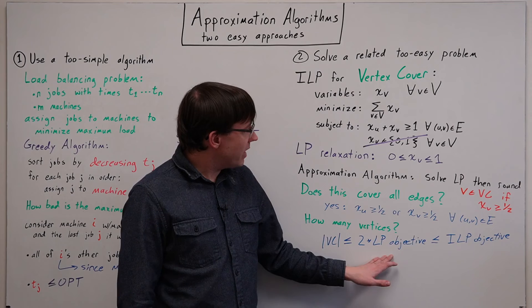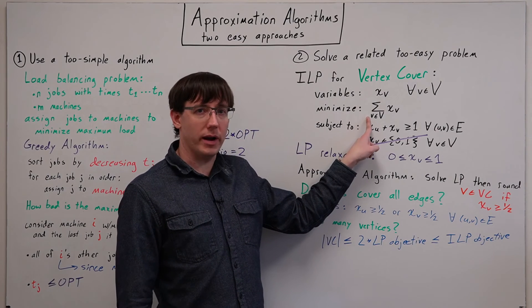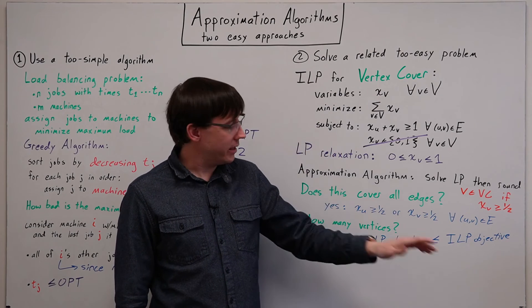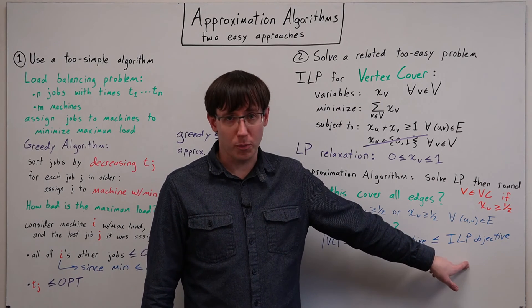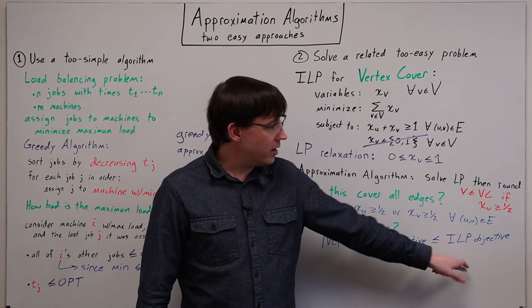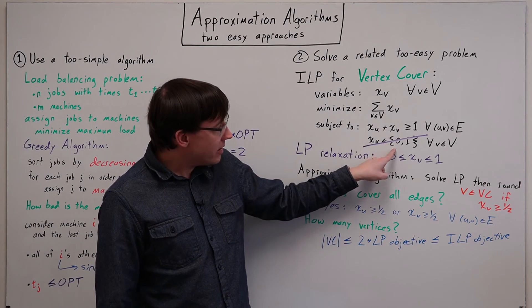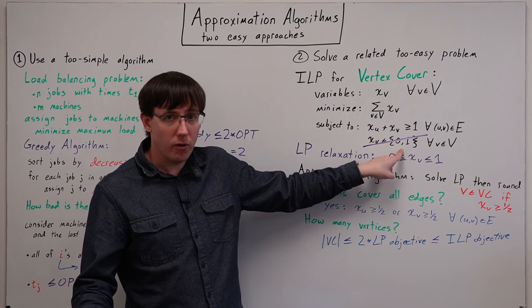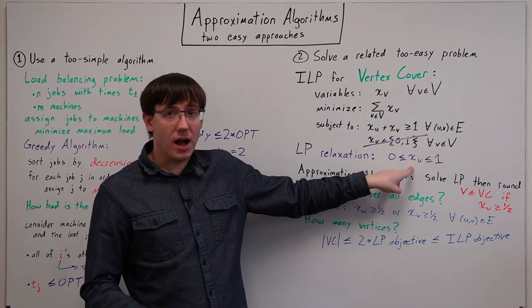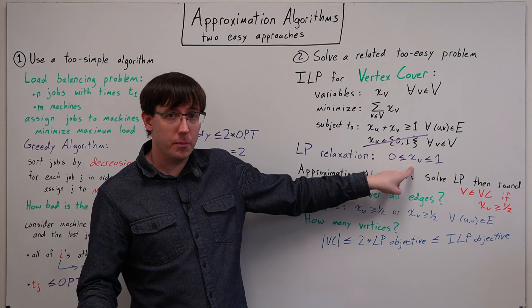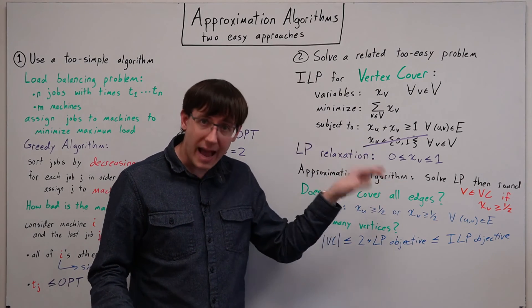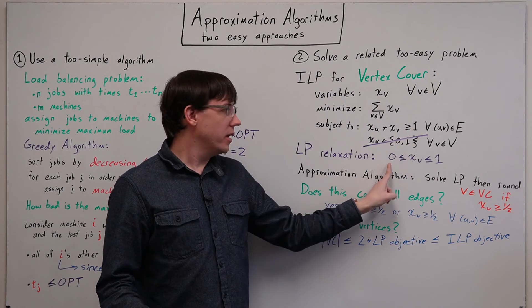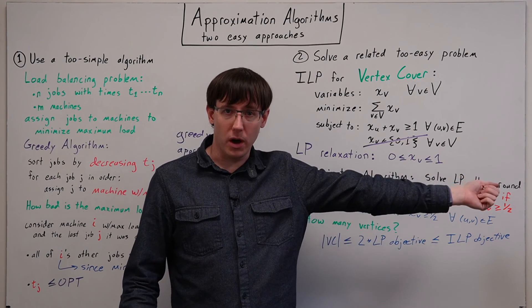And then the optimal value of the linear program is less than or equal to the optimal value of the original integer program. And we know that because anything that was a possible solution to the integer program is also a valid solution to the linear program.